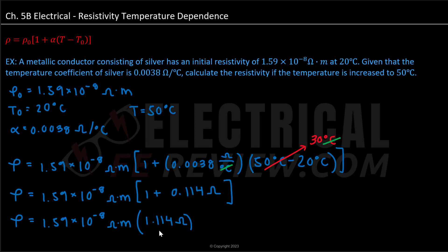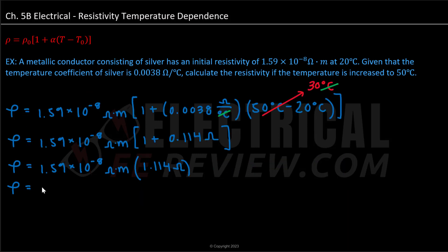We can now multiply this to our initial resistivity. After multiplying, our resistivity is equal to 1.77 times 10 to the negative eighth power ohms times meters.